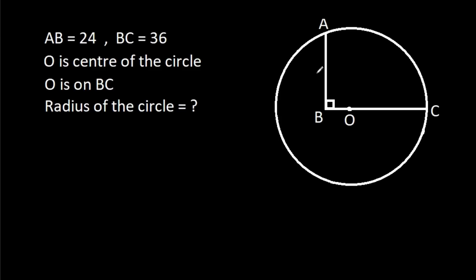In this video, we have been given that AB is 24 and BC is 36 and O is the center of the circle that is on BC. Then we have to find the radius of the circle.